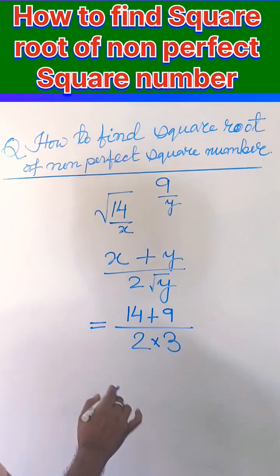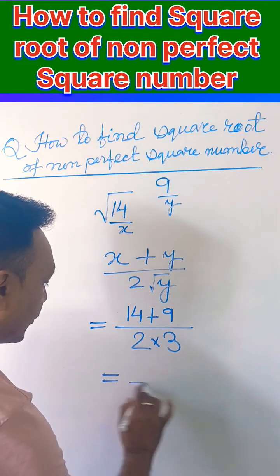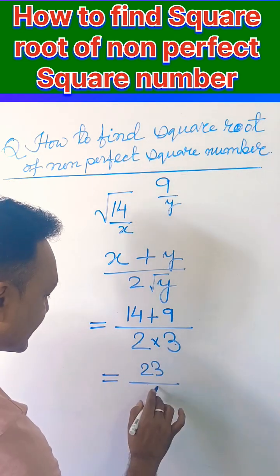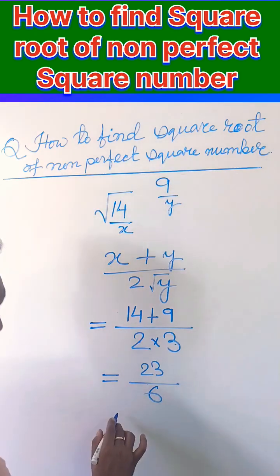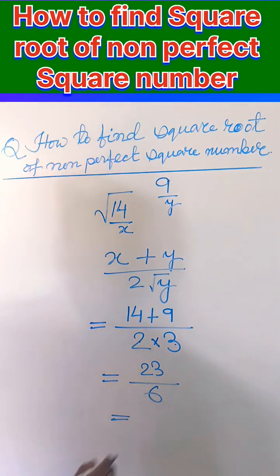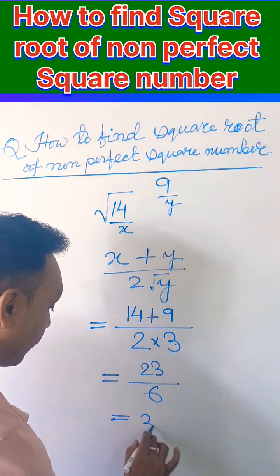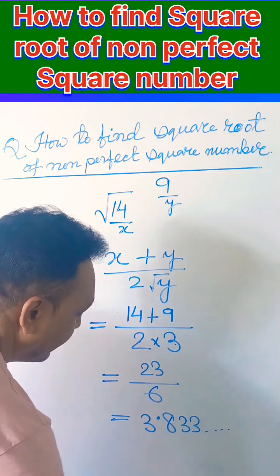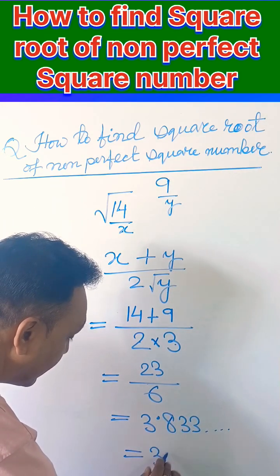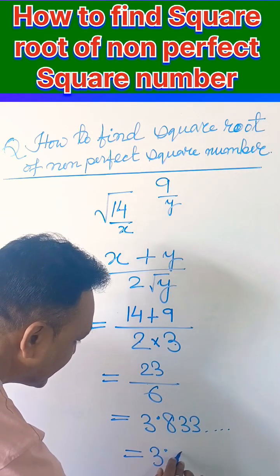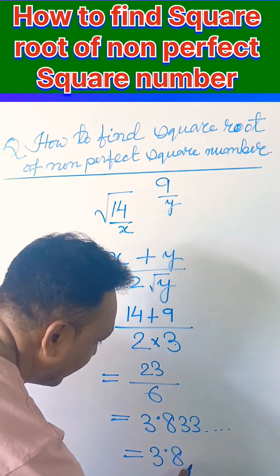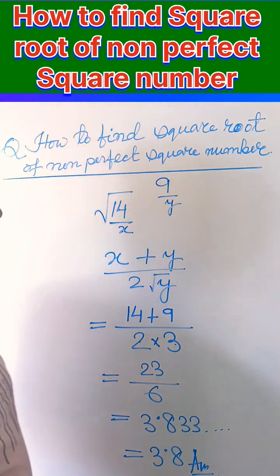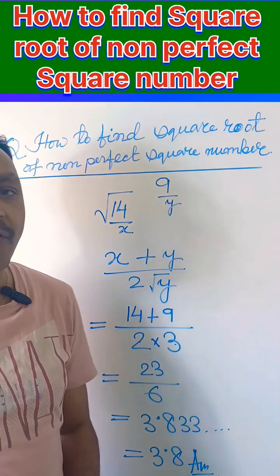14 plus 9 gives you 23. And 2 times 3 gives 6 in the denominator. So if we divide 23 by 6, you will get 3.833. So you can take 3.8. This is the answer for the square root of 14.